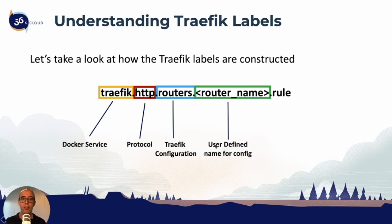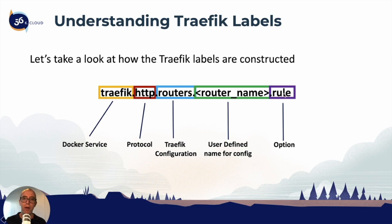The next element is the user-defined name — this is where we're defining either the router name or the service name, all user defined based on the configuration. And finally we have the option. The option is tied to the router itself, so what are we doing to the router — in this example, we're tying a rule to the router. It's quite easy to understand how labels work in traefik, and we'll continue using labels through this section and further sections. So really understand: the service, the protocol, what configuration, the user-defined name, and the option tied to the configuration.